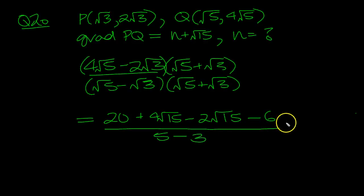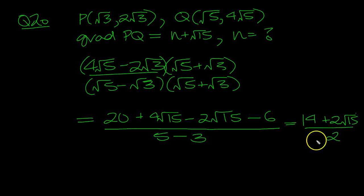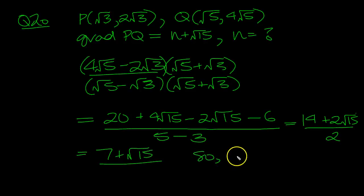Which is 2. So we've got 14 — that's 20 minus 6 — plus 2√15, over 2, which is 7 plus √15. So n is equal to 7.